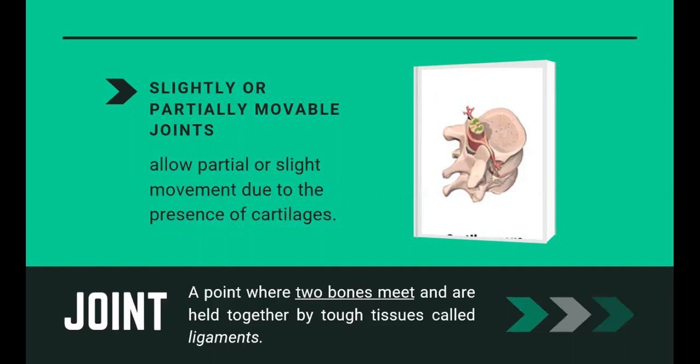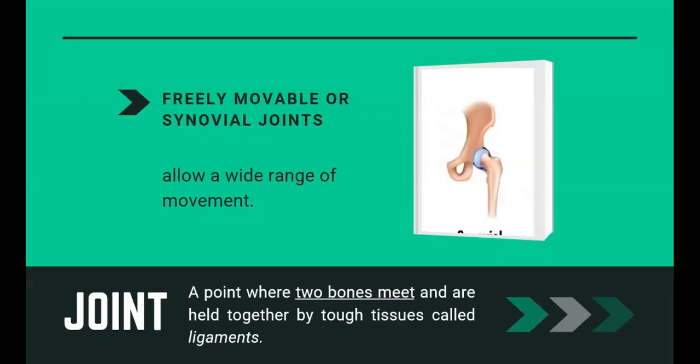These joints allow you to bend a little to the left or right. Lastly, freely movable or synovial joints allow a wide range of movement. They are cushioned with cartilage and held together by ligaments. Examples of movable joints include gliding joints, pivot joints, ball and socket joints, saddle joints, and hinge joints.